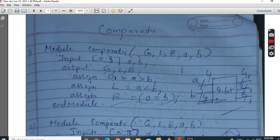So we are using data flow model using assign keyword. So G equals to A greater than B. This is the operator. A is greater than B. Then you make G equals to 1.